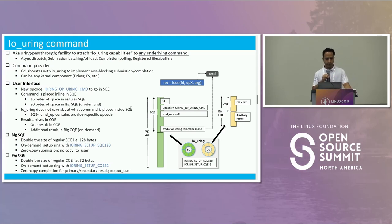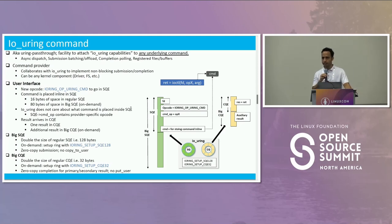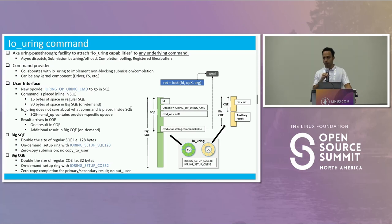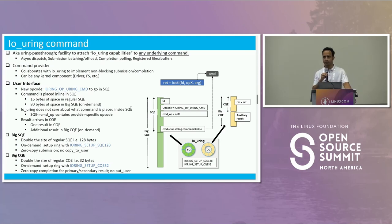If you look at the user interface: you have to use a new opcode called IORING_OP_URING_CMD, which goes into the SQE — similar to how you use IORING_OP_READ or IORING_OP_WRITE. The interesting piece is that the command you need to supply, you don't really have to allocate externally. You can get it from the SQE itself. If you're using a regular SQE, you will get 16 bytes of free space.